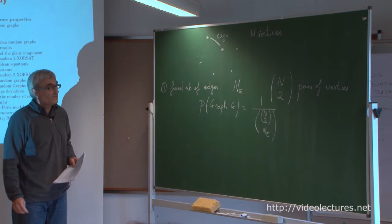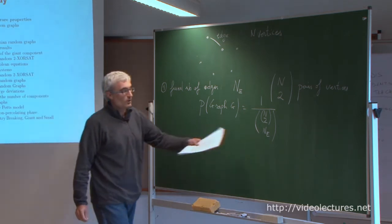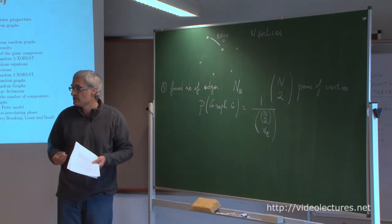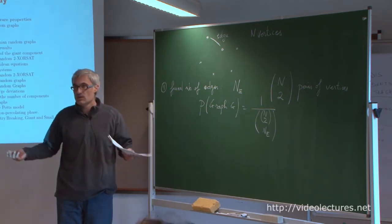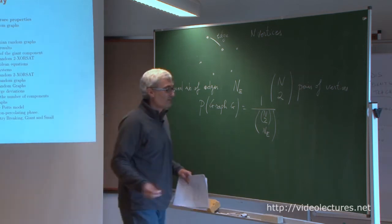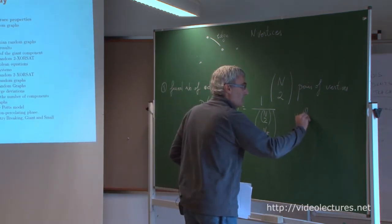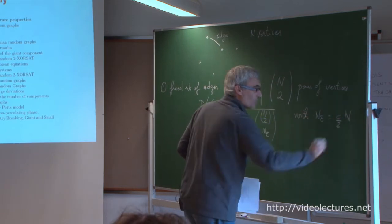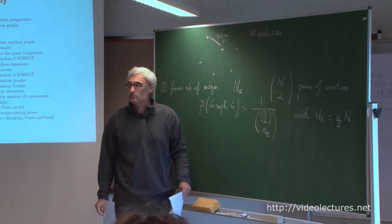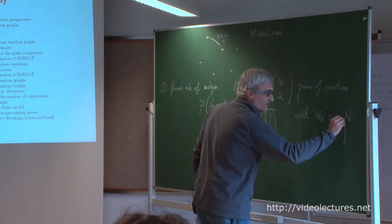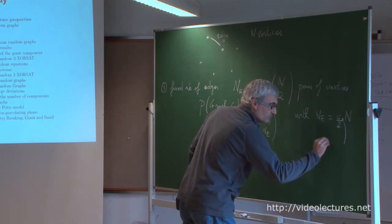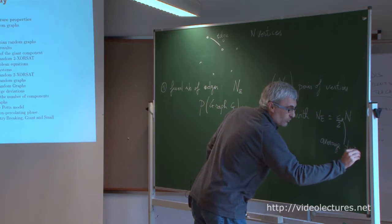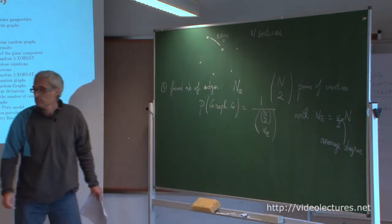I will mostly specialize to the case where the number of edges scales with the number of vertices in the large-n limit. Specifically, n_e will be proportional to n with a factor c over 2, where c is simply the average degree — the average number of neighbors of a vertex in the graph.